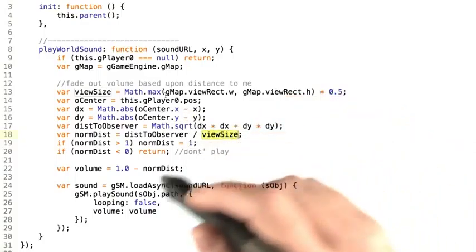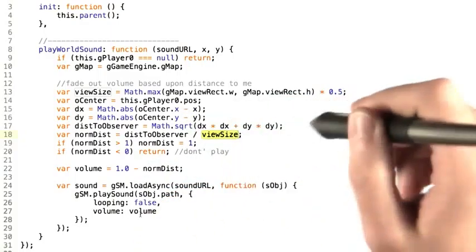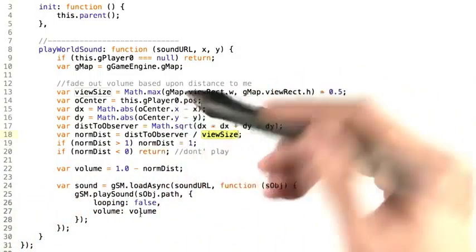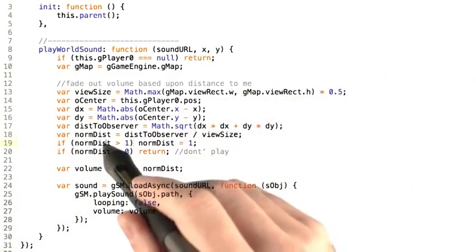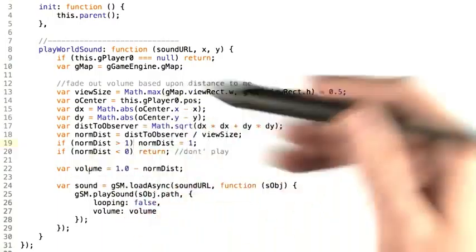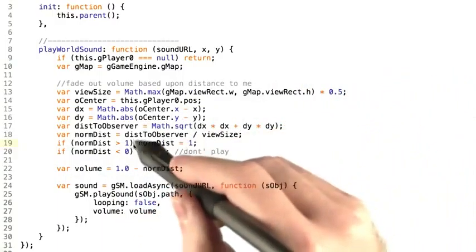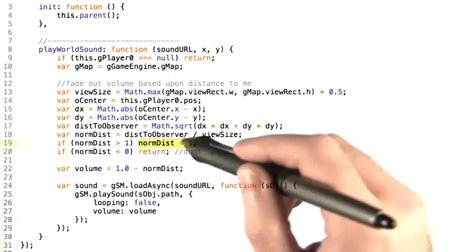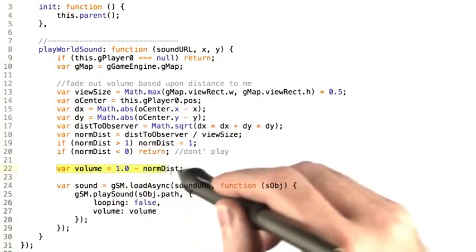Like we talked about before, if we are more than two view sizes away, then maybe we want to start reducing the sound. So in this case, if the norm of the distance is greater than one view size away, then we set the norm distance to one since we're going to reduce the volume by the norm distance later on.